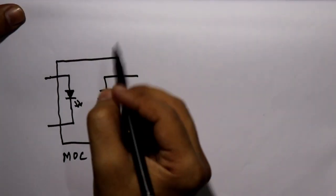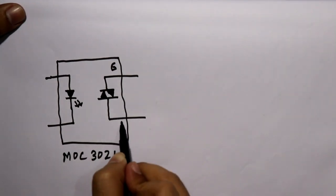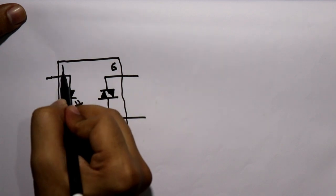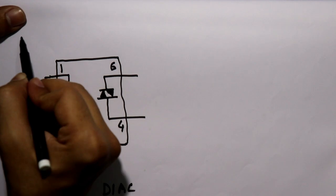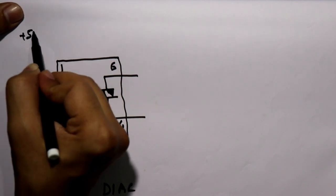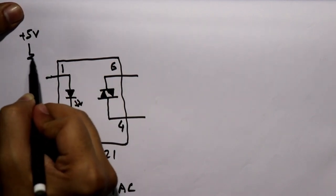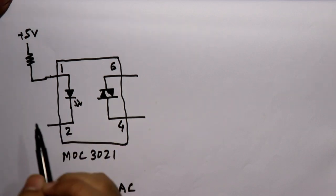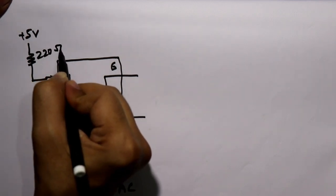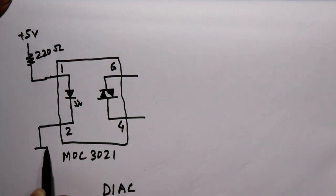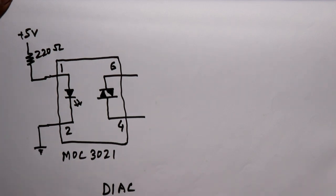Now see here it is pin number six, pin number four, pin number one and pin number two. In the input side we will apply plus 5 volt here, then we'll connect one 220 ohm resistor and we'll connect to it pin number one. The value is 220 ohms and pin number two is connected to ground.